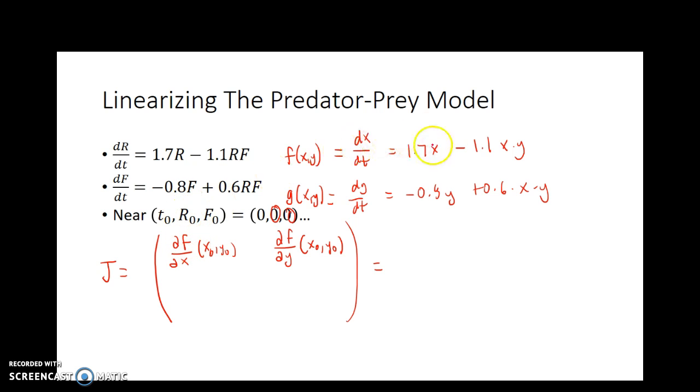So the partial of f, which is the partial of this guy with respect to x, means that y is a constant. So essentially I'm taking the derivative of 1.7x minus 1.1y times x. So this is a constant and this is a constant. And the derivative of 1.7x is simply 1.7. And the derivative of 1.1y times x with respect to x is minus 1.1y.